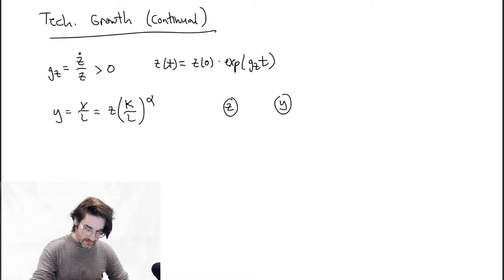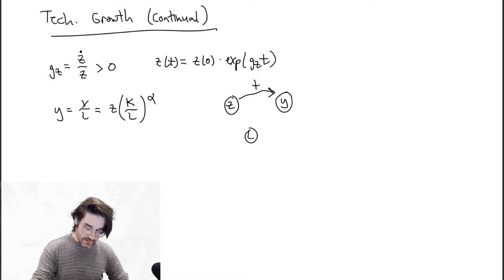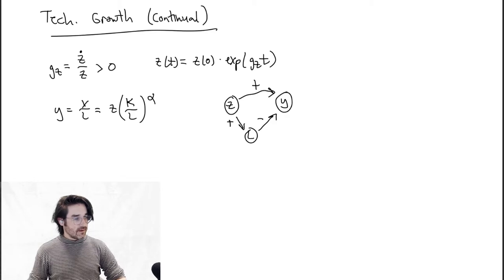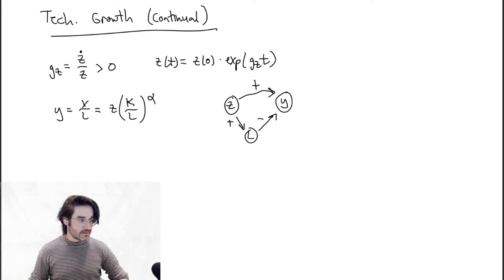So you have a direct positive effect of Z on Y, and then Z has a direct effect on L over time, and L has a negative effect on Y — so plus times minus is minus, giving a negative indirect effect. The net of those is not clear — the effect is ambiguous.